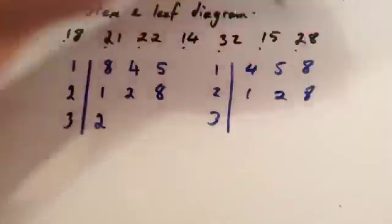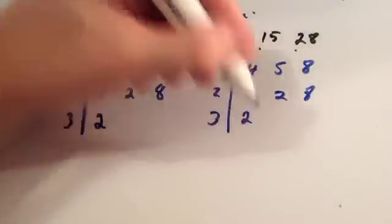1, 2, 8, well, that's already in order. 1, 2, and 8. And 2 for your 32.